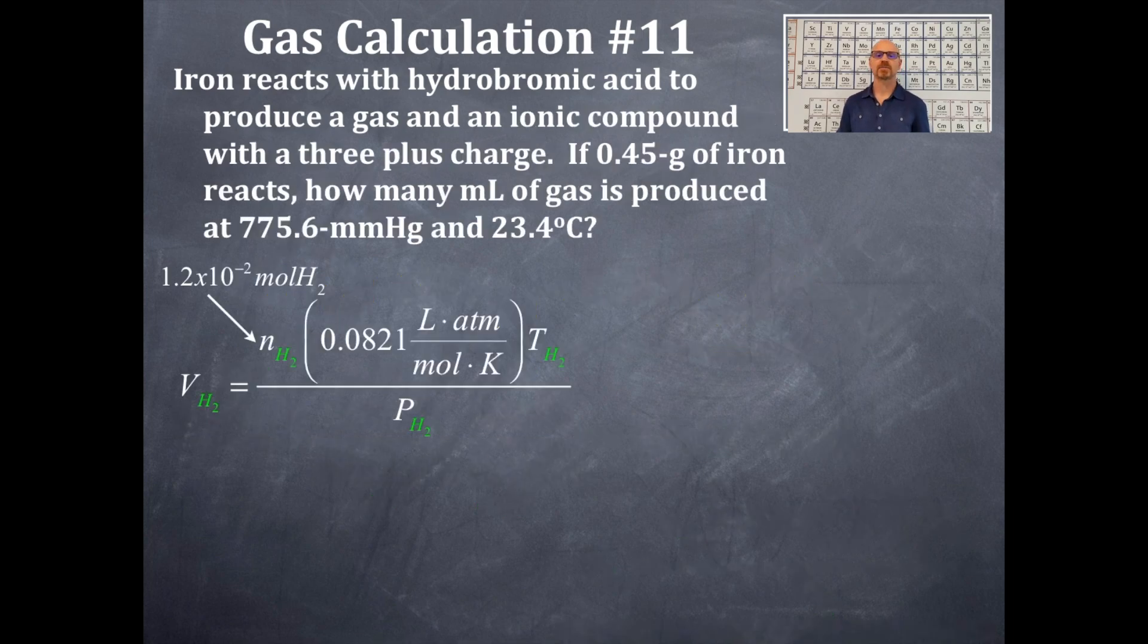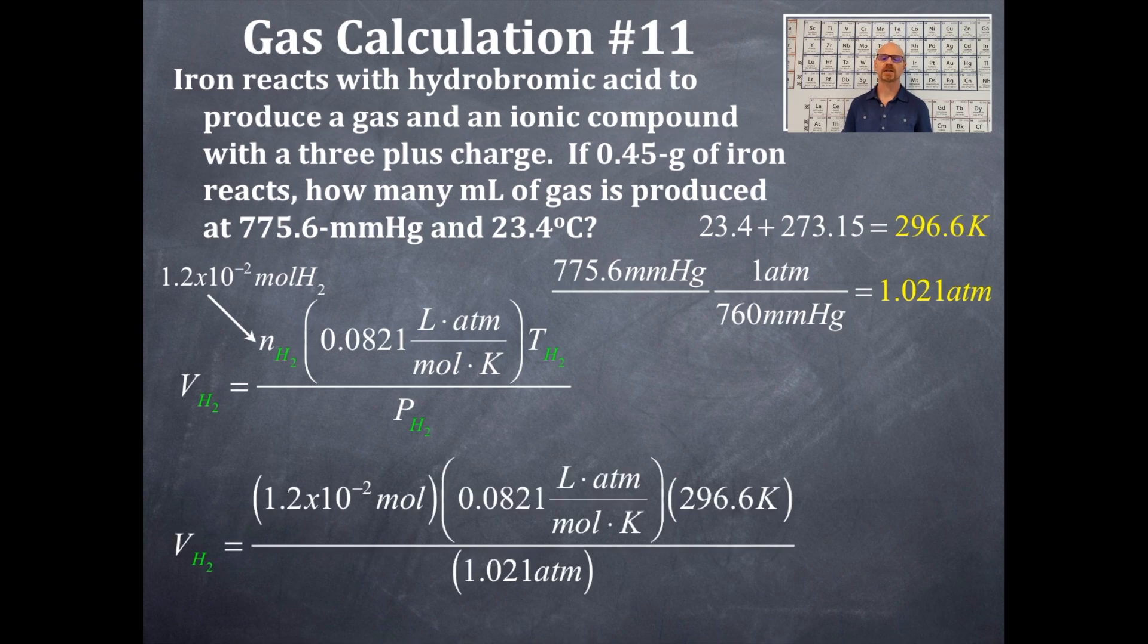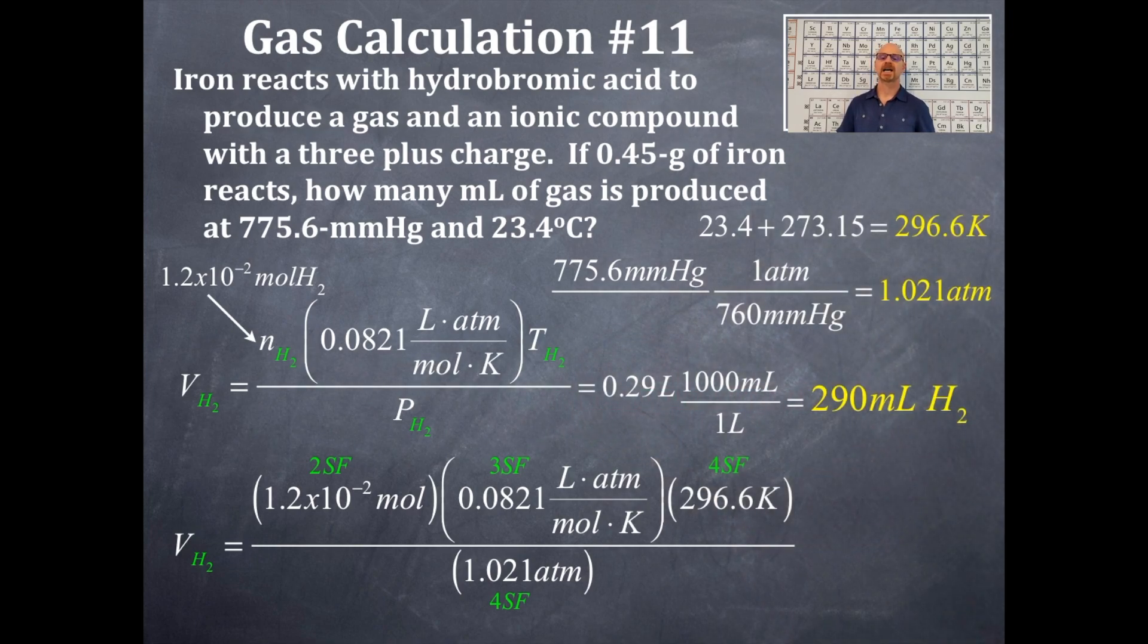I got that number, the moles of hydrogen, previously on the previous slide. I'm going to get now the temperature and the pressure in the right set of units here. Here's the temperature in Kelvin, and now I'm going to convert the pressure into atmospheres. We're going to plug this right into this equation. We're going to look at the number of significant figures that we have, and then this is going to be the volume of hydrogen in liters. So it's 0.29 liters. Now I'm going to convert these liters into milliliters because the question is asking for how many milliliters of gas is produced. Here's our conversion from liters to milliliters, and then here is my final answer, 290 milliliters of hydrogen. That 290 has two significant figures. There's no decimal in the number.